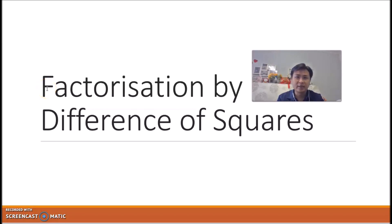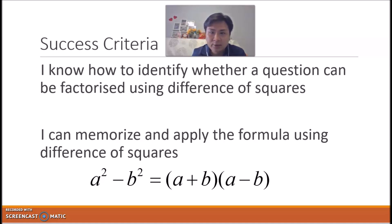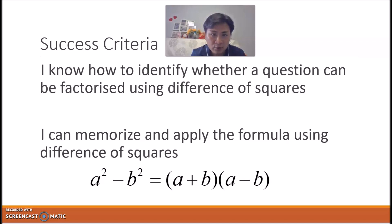Hello everyone, today we are going to look at factorization by difference of squares. Let's take a look at some success criteria for applying difference of squares. We have actually learned four different methods of factorization: common factors, multiplication frame, difference of squares — which is what we're currently learning — and grouping.